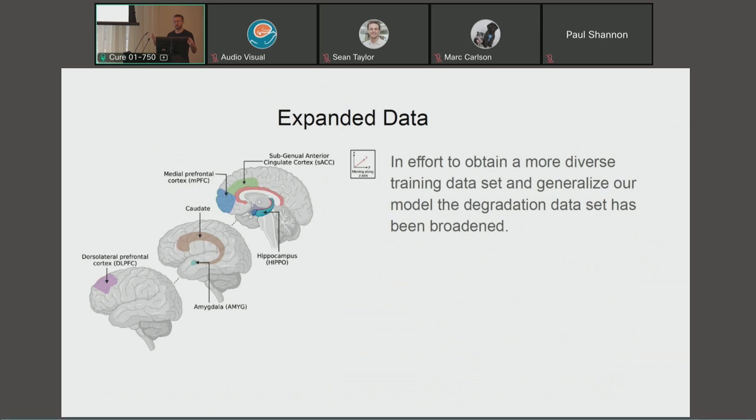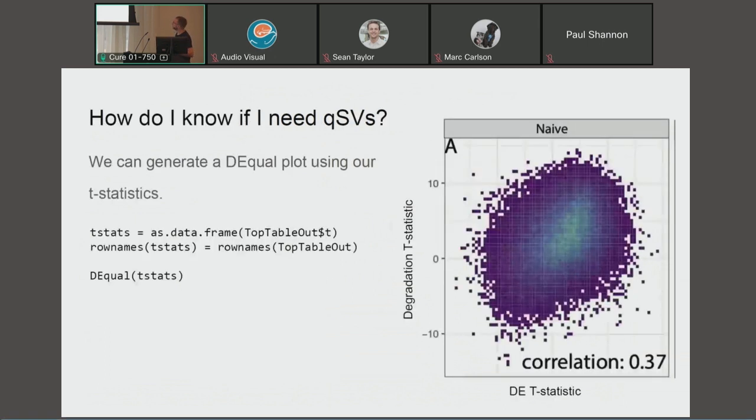I hadn't got far enough to test this in GTEx data yet, but that would be the gold standard. So how do you know if your data needs QSVs? The simple answer is I made an R package with a D-equal function. We're calling this differential expression quality plot. Essentially, if it looks like this, where there's a strong correlation, you should use QSVs. This function takes the output of top table and feeds the T statistics from your differential expression into a plot versus the T statistics from my degradation experiment. If those two are correlated, it means your data is confounded and you should explore using the qSVA analysis.